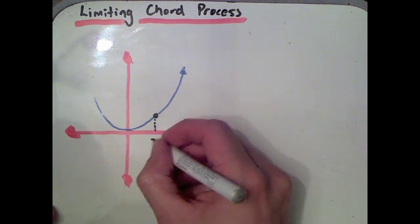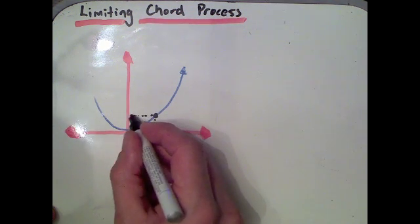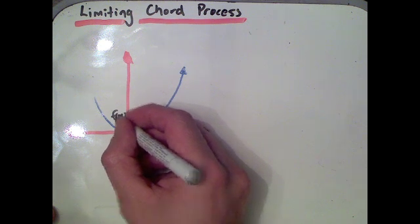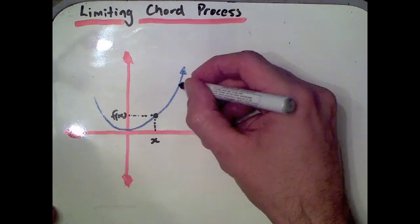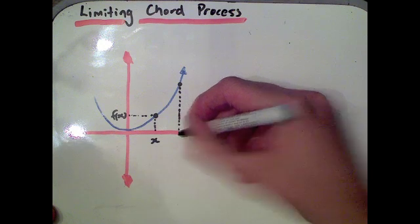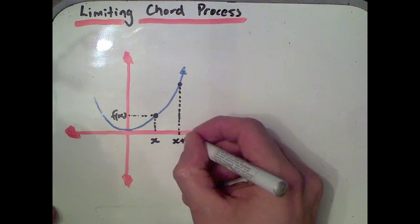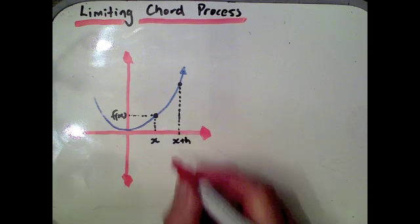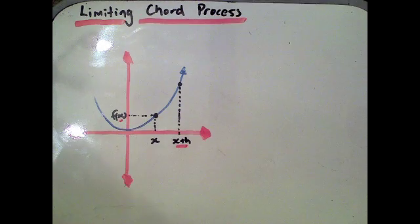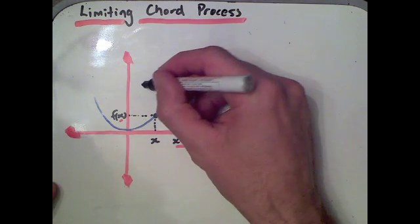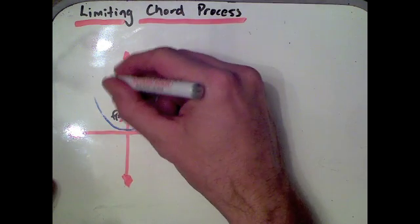We're looking at a function here. We can take a point, call it x, and then our y value we refer to as f of x. Now let's choose a second point that has a distance of h, so we'd call that x plus h, which means the corresponding y value would be f of x plus h.